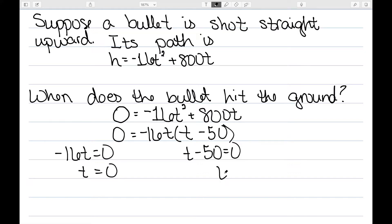So that tells me that minus 16t equals 0, or t minus 50 equals 0. So t equals 0, or t equals 50. I didn't give my units here, but my units are in feet and seconds. So we know that this bullet would hit the ground after 50 seconds.